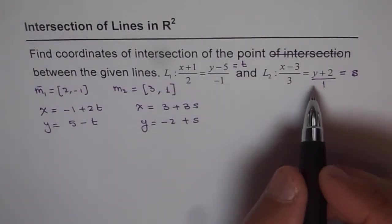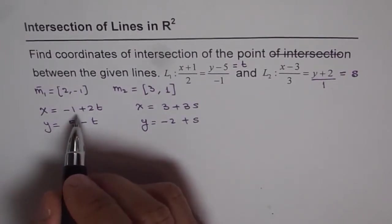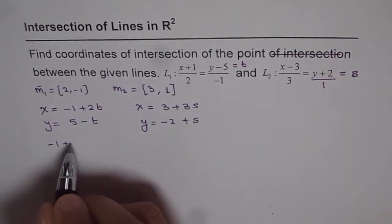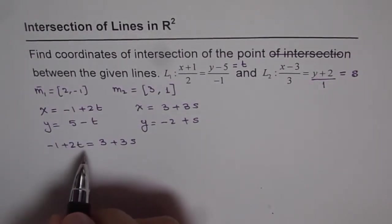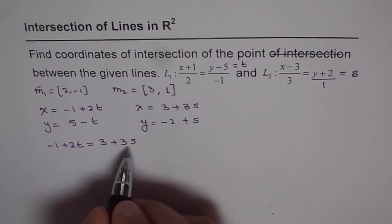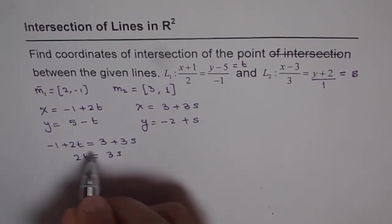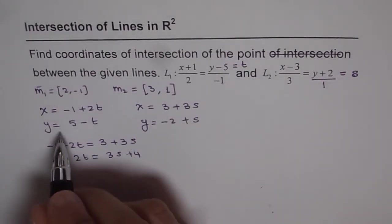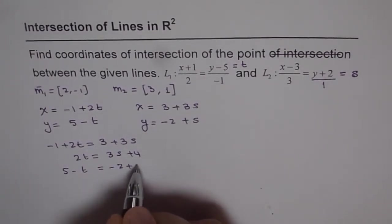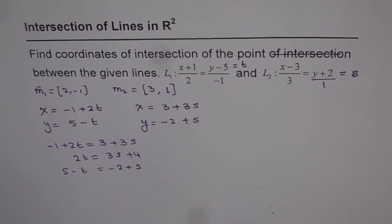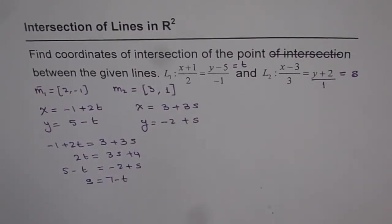If there is a point of intersection, their x and y coordinates must match, so we equate these. From the x-coordinates: -1 + 2t = 3 + 3s, which simplifies to 2t = 3s + 4. From the y-coordinates: 5 - t = -2 + s, from which we get s = 7 - t.